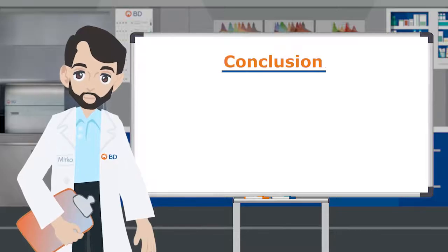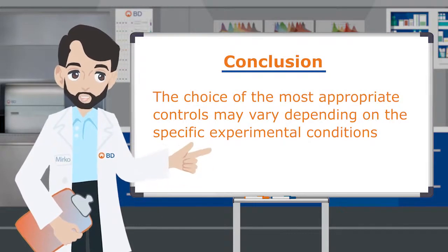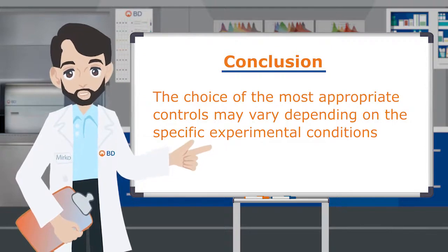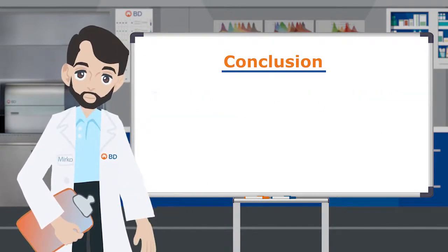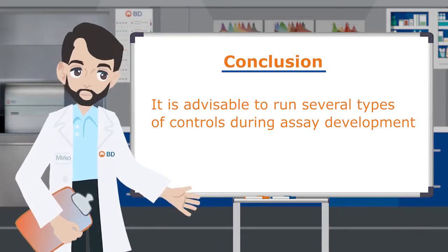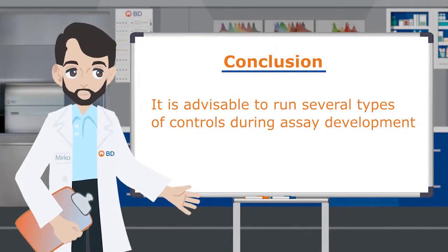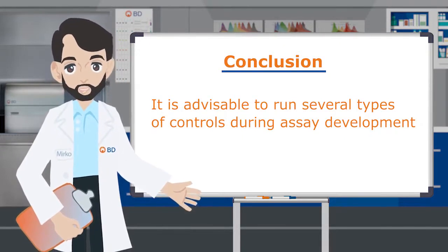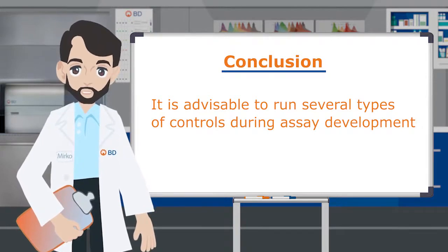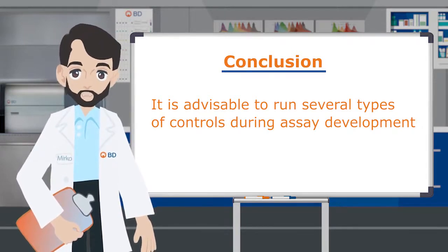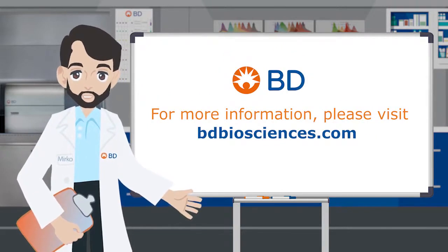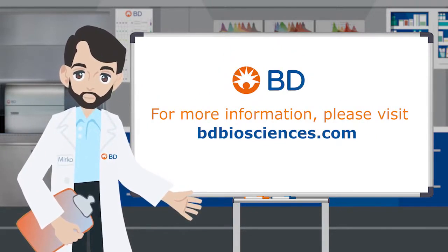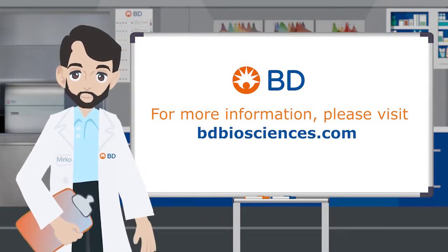In conclusion, the choice of the most appropriate controls may vary depending on the specific experimental condition, and therefore it is advisable to run several types of controls during assay development to determine the main source of background and the best strategy to account for it in a given experiment. For information about the products or concepts featured in this video, please visit bdbiosciences.com.